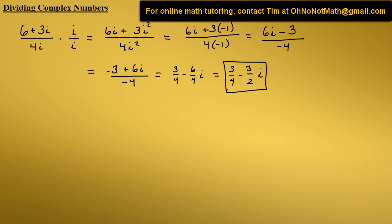Now let's try one with a binomial in the denominator, instead of a monomial, which we had here. So let's try 8 minus i over 2 plus 5i. Again we have an imaginary number in the denominator, so we have to get rid of that.